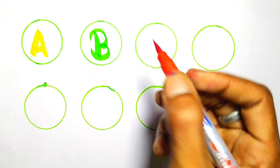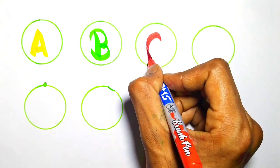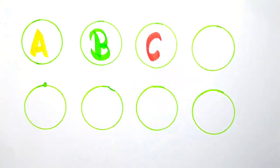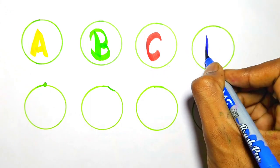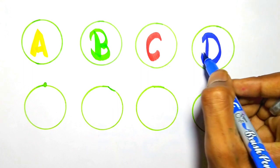Red color, C. C for cat. Blue color, D. D for dog.